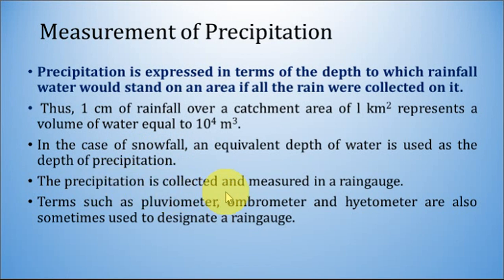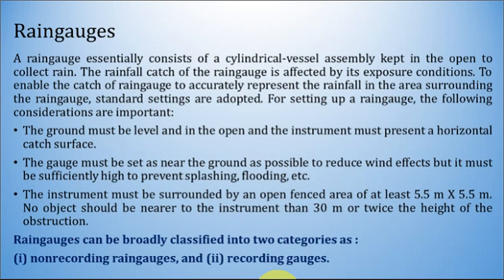The precipitation is collected and measured in a rain gauge. Terms such as pluviometer, ombrometer, and heightometer are used sometimes to designate a rain gauge. A rain gauge essentially consists of a cylindrical vessel assembly kept in the open to collect rain. The rainfall catch of the rain gauge is affected by its exposure conditions, and standard settings are adopted to enable accurate representation of rainfall in the surrounding area.